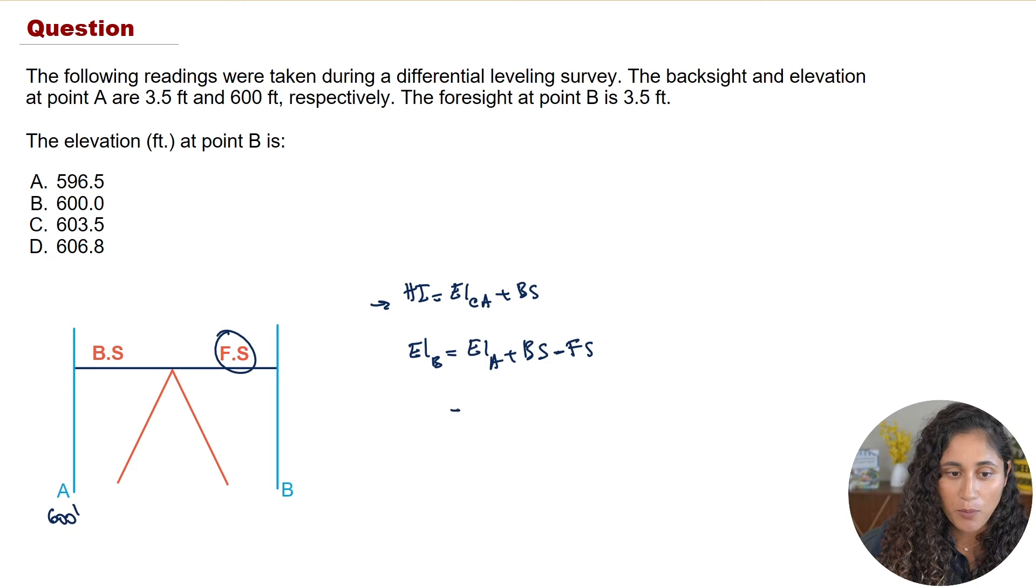So now the elevation at point A was given as 600. Then we're going to do plus the backside which was given as 3.5 feet, and then we're going to do minus the foresight which is also 3.5 feet. And now if you guys plug in these numbers you're going to get 600 feet. So if we take a look at the multiple choice, the answer is going to be B.